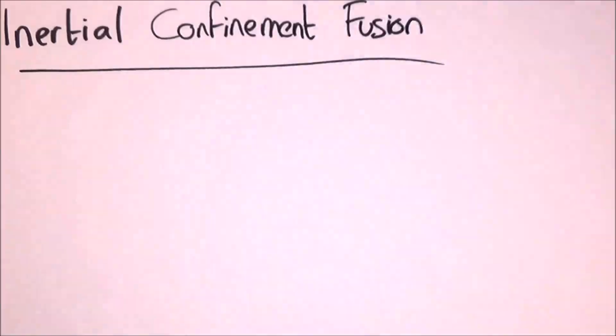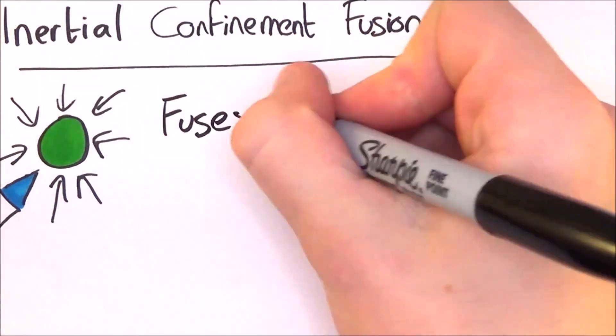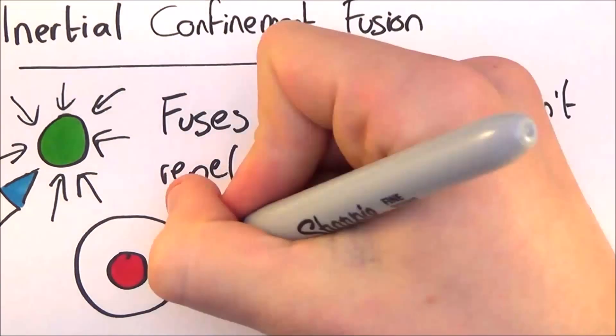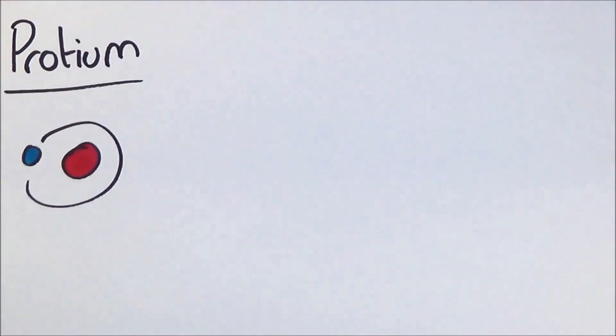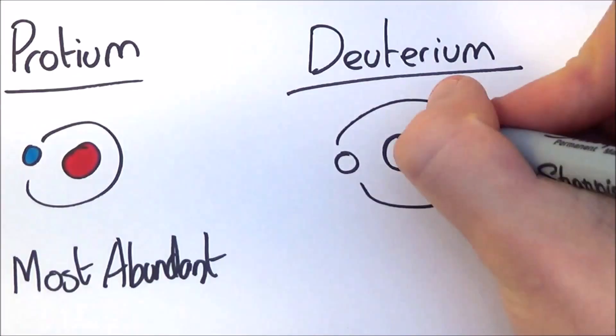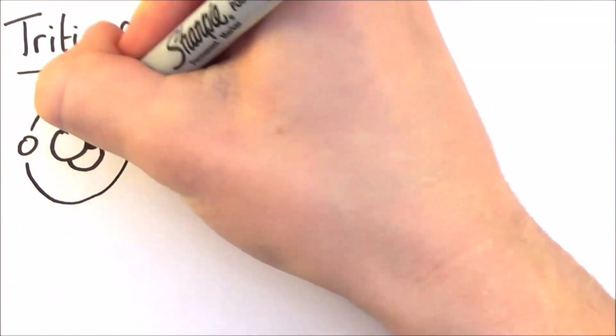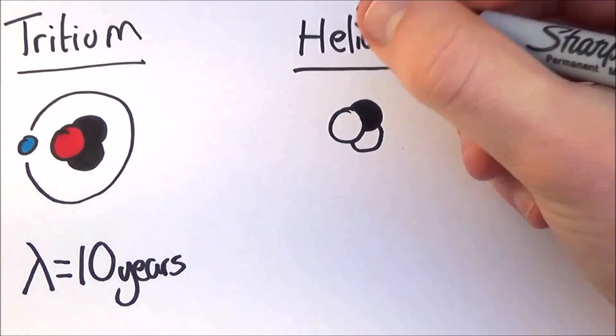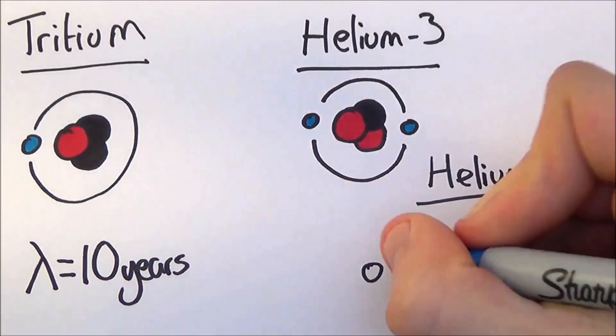The next is inertial confinement fusion. This is initiated by heating up and then compressing a fuel. It fuses the nuclei together so fast that they don't have time to repel each other. This is often made by a mixture of isotopes of either hydrogen or helium. Protium, which is the most common form of hydrogen and the most abundant element in the universe. This consists of one proton and no neutrons. Deuterium, which is one proton and one neutron, can be extracted from salt water. Tritium has one proton and two neutrons. It has a half-life of about ten years and can be created by bombarding lithium with neutrons. Helium-3 has two protons and one neutron. Helium-4 has two protons and two neutrons and this is the most common form of helium.